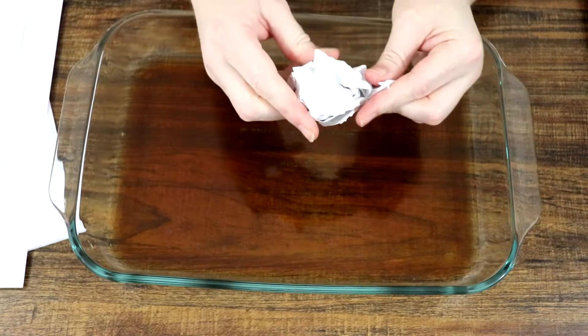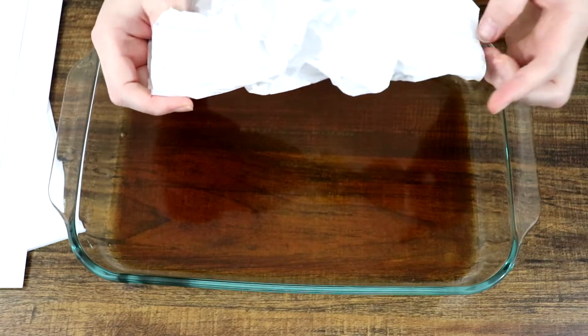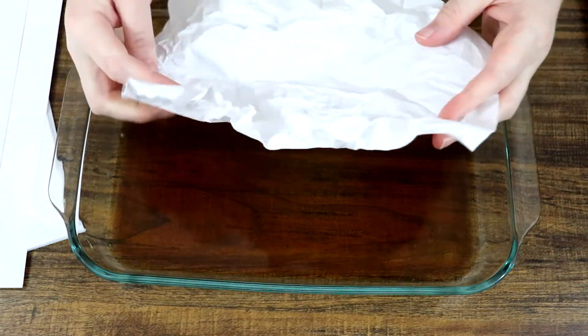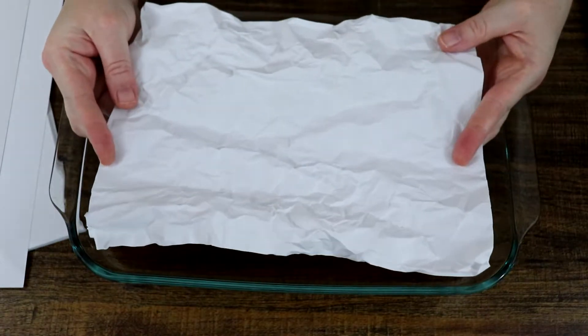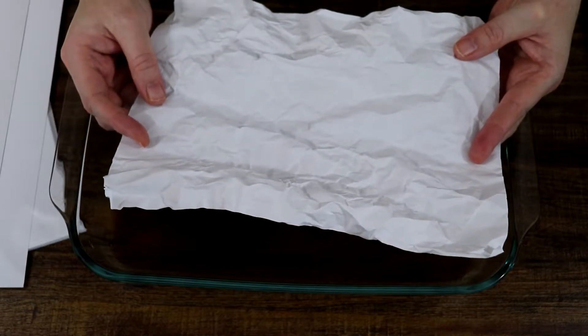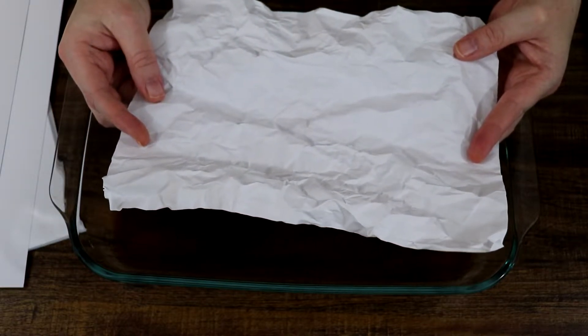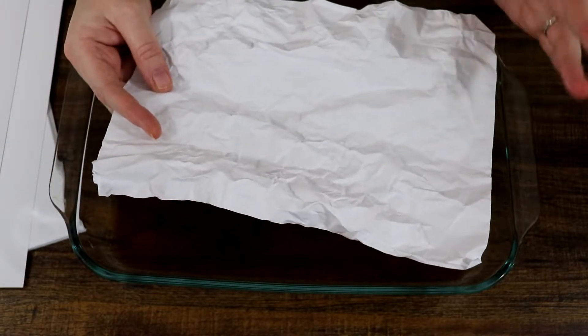So once you crumple it, you're just going to pull it out, straighten it up a bit, and that's it. It's really simple, really easy trick, and you can decide how much you want to crumple. If you want to just crumple the edges you can do that. If you want to do the whole thing, do the whole thing.